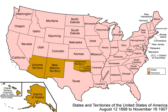A dramatic expansion in farming took place. The number of farms tripled from 2.0 million in 1860 to 6.0 million in 1905. The number of people living on farms grew from about 10 million in 1860 to 22 million in 1880 to 31 million in 1905. The value of farms soared from $8 billion in 1860 to $30 billion in 1906. The federal government issued 160-acre tracts virtually free to settlers under the Homestead Act of 1862. Even larger numbers purchased lands at very low interest from the new railroads, which were trying to create markets.